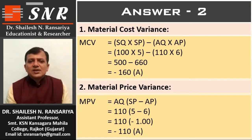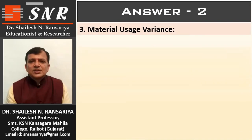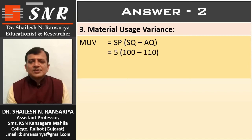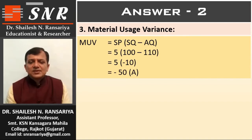Third variance: material usage variance, MUV. The formula is SP × (SQ minus AQ). So, SP 5 × (SQ 100 minus 110). So, 5 × minus 10. The variance is minus 50, adverse.